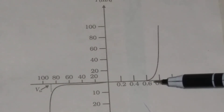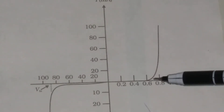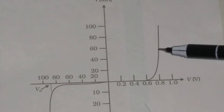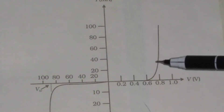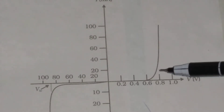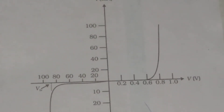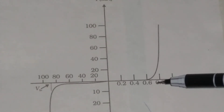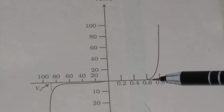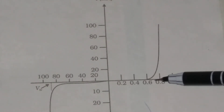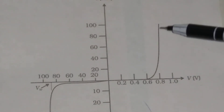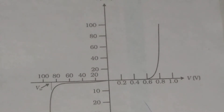At the threshold voltage, the diode current increases exponentially. The exponential increase in current occurs for a very small increase in bias voltage — for example, from 0.7 volt to 0.8 volt, the current is sharply increasing.